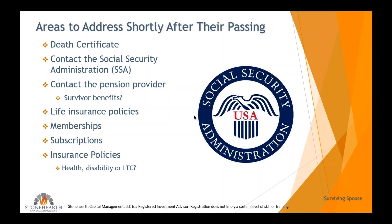Next, contact the pension provider. Let's presume that dad had a pension from, say, General Electric or the government. You want to contact them because many pensions offer a survivor benefit when the decedent signed up for pension benefits. Hopefully as a survivor, when you make that call, there are no surprises. Typically the options are a 50%, 75%, or 100% benefit. That means if dad was getting $1,000 a month, a 50% survivor benefit would give you $500 a month.